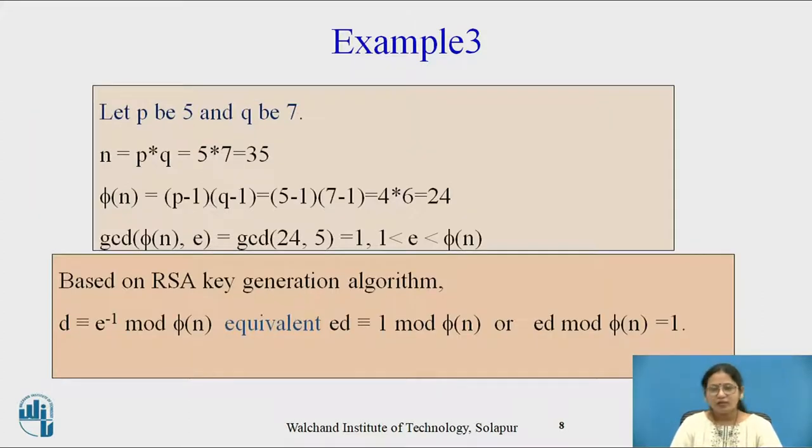So let p be 5 and q be 7, it is an assumption. For calculation we have chosen small numbers; actually they are large and random. So n equals p multiply by q, that is 5 times 7 equals 35, and phi of n equals (p-1) times (q-1) equals 24.